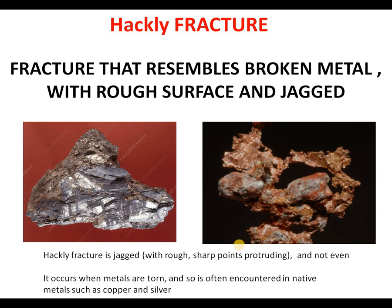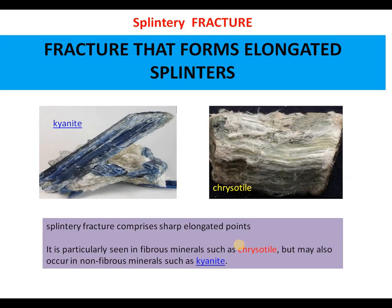Copper and silver minerals are shown in this picture. Splintery fracture means the mineral where we can find elongated splinters. Splintery fracture can be seen in both fibrous minerals such as chrysotile and in non-fibrous minerals such as kyanite. The figure shows very clearly kyanite and chrysotile. Kyanite is a non-fibrous mineral whereas chrysotile is a fibrous mineral. In both cases we can see the elongated splinters — the points are very sharp and elongated.